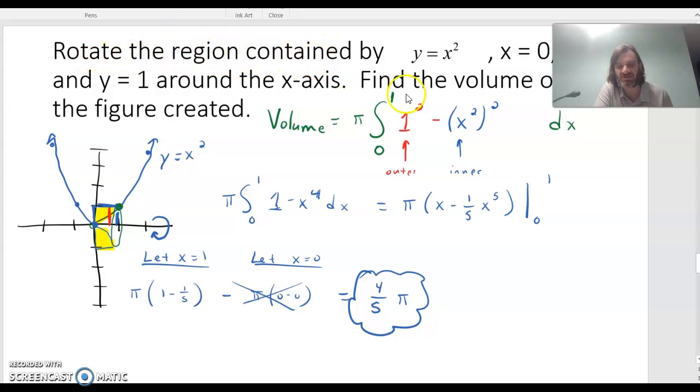Let's see here. It says rotate the region contained by y equals x squared, the parabola, x equals 0, that's the y-axis, and y equals 1. And we're going to take that region, which, first of all, let's look at it.